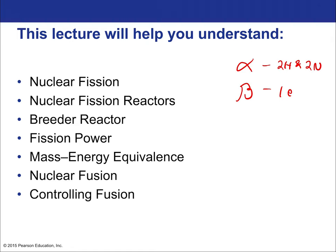Here in this chapter, we're going to talk about the most dramatic type of transmutation there is — where you take two nuclei and put them together, or you split one apart into two big chunks. That's fission and fusion. We'll talk about their applications in reactors, getting power from fission, mass-energy equivalence, and which elements are good for fission versus fusion.